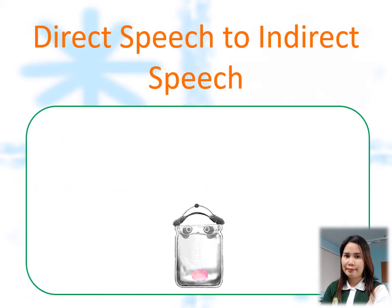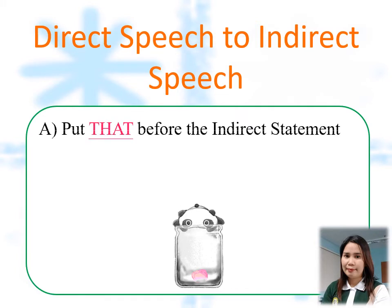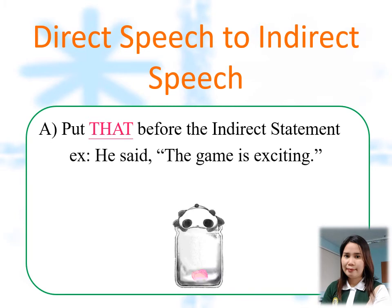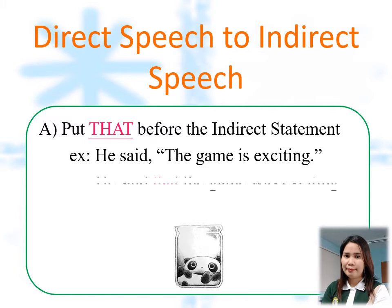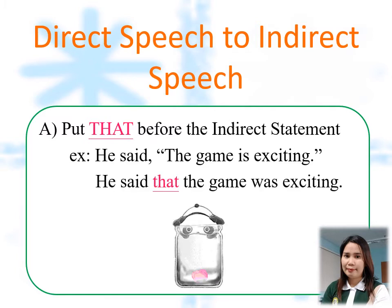Now, let's talk about converting direct speech to indirect speech. First, you have to put "that" before the indirect statement. For example, "He said the game is exciting" is direct speech. When we convert it into indirect speech, it will become: He said that the game was exciting. And, of course, we have to remove the quotation marks.